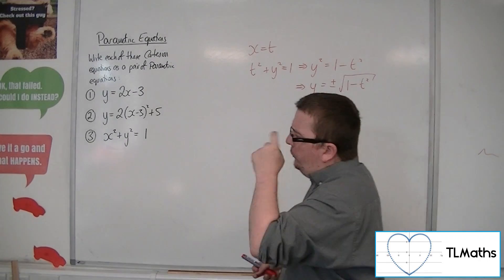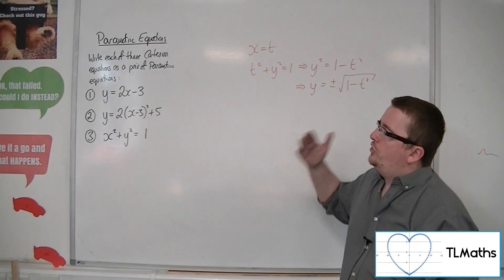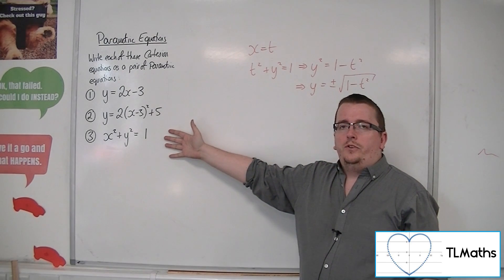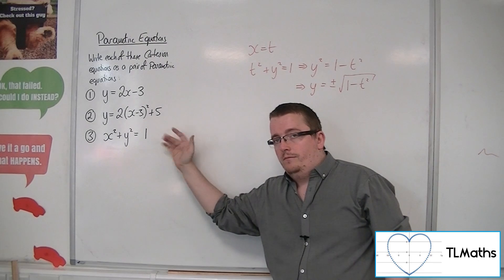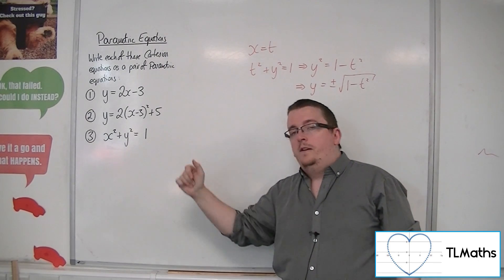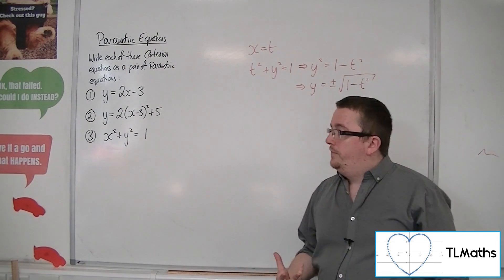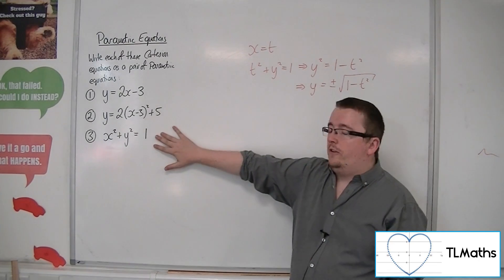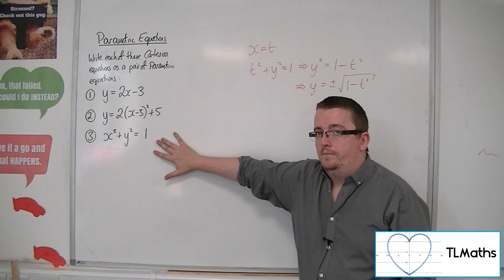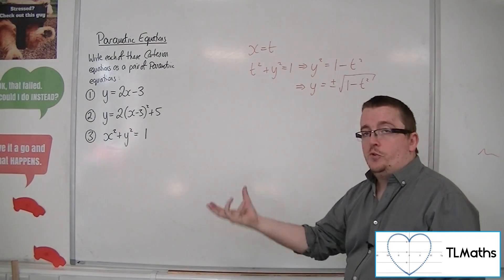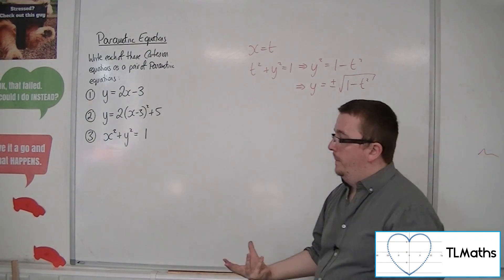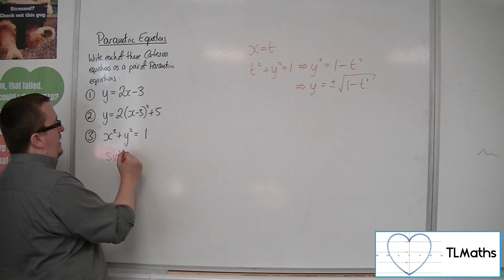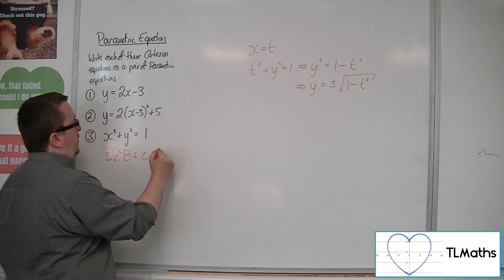Well, also the neat thing with parametric equations is that if you can spot a trig equation that fits in, then you can use that. And we know a trig identity that works with x squared plus y squared equals 1. And that is sine squared plus cos squared is 1.